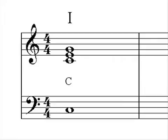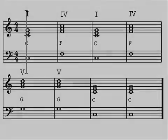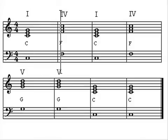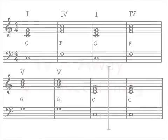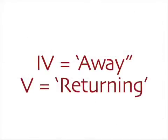But all the other chords can give the harmony a sense of direction or place too. Listen to the movement from chord one to chord four. It's a definite step away. And if we move to chord five, it creates an anticipation that we are returning home again. So chord four is an away chord, while five is a returning chord.